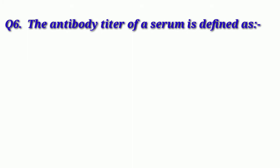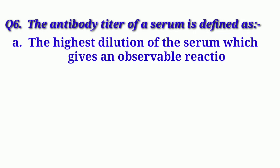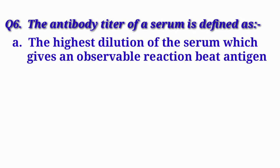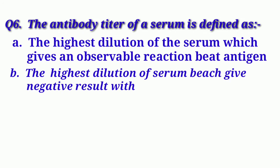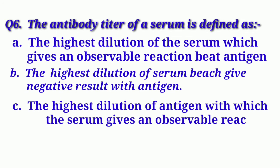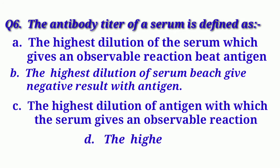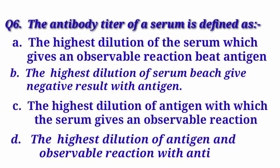Our next question is: The antibody titer of serum is defined as. Option A: The highest dilution of the serum which gives an observable reaction with antigen. Option B: The highest dilution of the serum which gives a negative result with antigen. Option C: The highest dilution of antigen with which the serum gives an observable reaction. Option D: The highest dilution of antigen giving an observable reaction with antibody.